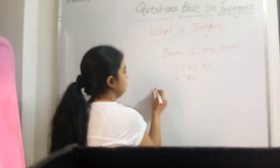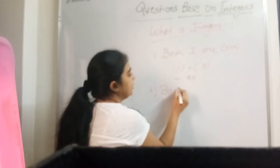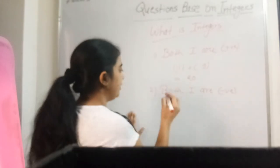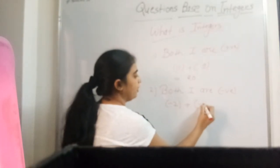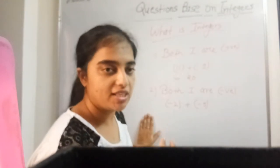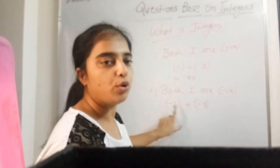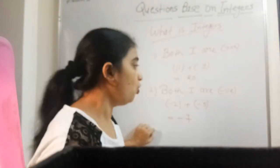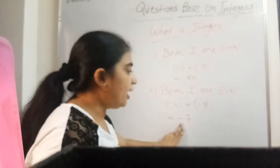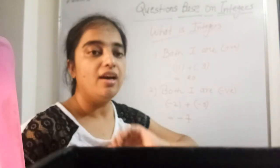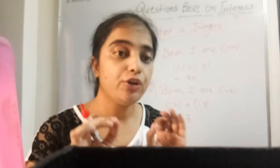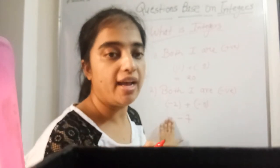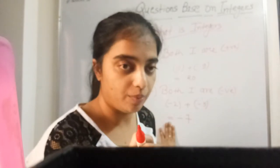Second case: both integers are negative. Agar main kahun — do negative integers ka addition karna hai — like, add minus 2 plus minus 5. Aapke paas do negative integers hain: minus 2, minus 5. In dono ko add karna hai, so the answer is minus 7. Why minus 7? Addition to ho gayi — 2 plus 5 is 7 — but the symbol is minus. So remember: whenever you add two negative integers, the answer you get is also a negative integer.